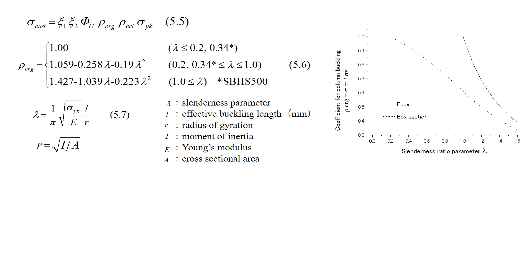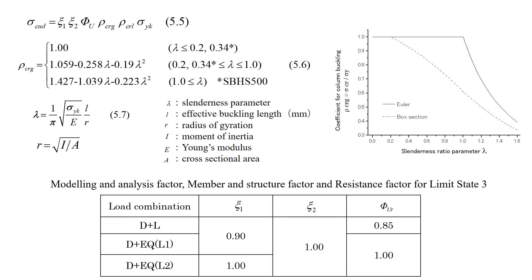In the limit value for axial compression, there are two coefficients: ρ-crg and ρ-crl. ρ-crg is a coefficient for column buckling, and ρ-crl is the coefficient for plate buckling. Equation 5.6 and the figure show ρ-crg for a box section, which depends on slenderness parameter. This table shows the modeling and analysis factor, member and structure factor, and resistance factor for the limit state.